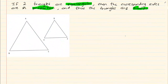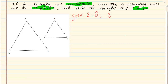Now if we need to prove this theorem, what are they giving us? First of all we have triangle ABC and triangle DEF. More importantly, they are telling us that the triangles are equiangular. We are given that angle A is equal to angle D, angle B is equal to angle E, and angle C is equal to angle F.